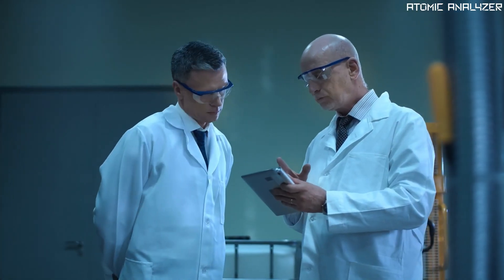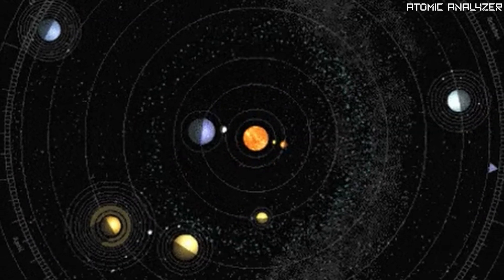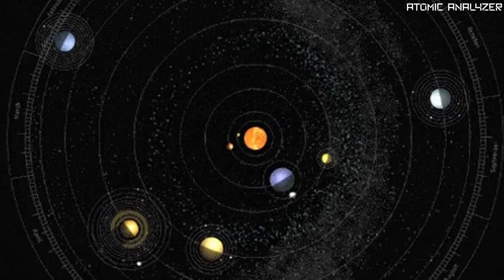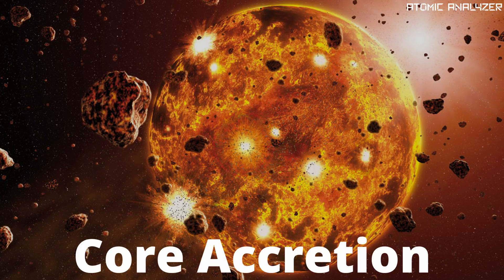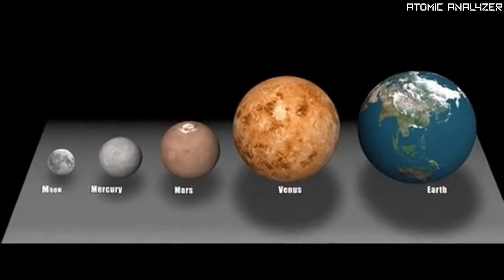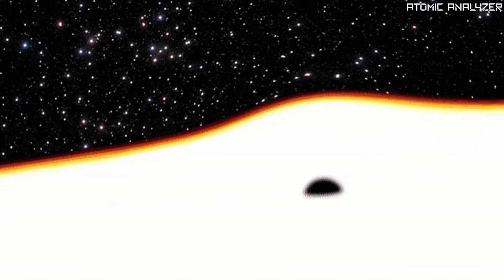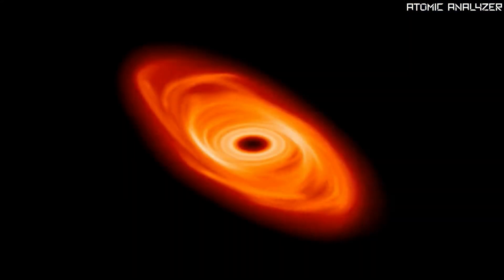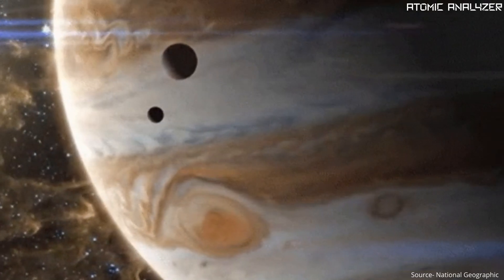Scientists have developed three different models to explain how planets in and out of the solar system may have formed. The first and most widely accepted model, core accretion, works well with the formation of the rocky terrestrial planets but has problems with the giant planets. The second, pebble accretion, could allow planets to quickly form from the tiniest materials. The third, the disk instability method, may account for the creation of giant planets.